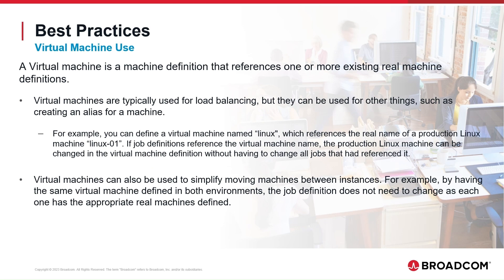A virtual machine is a machine definition that references one or more existing real machine definitions. Virtual machines are typically used for load balancing, but they can also be used for other things such as creating an alias for a machine. For example, you can define a virtual machine named Linux which references the real name of a production Linux machine, Linux01. By referencing the virtual machine name in job definitions, the production Linux machine can be changed in the virtual machine definition without having to change all jobs that reference it. Virtual machines can also be used to simplify moving machines between instances.